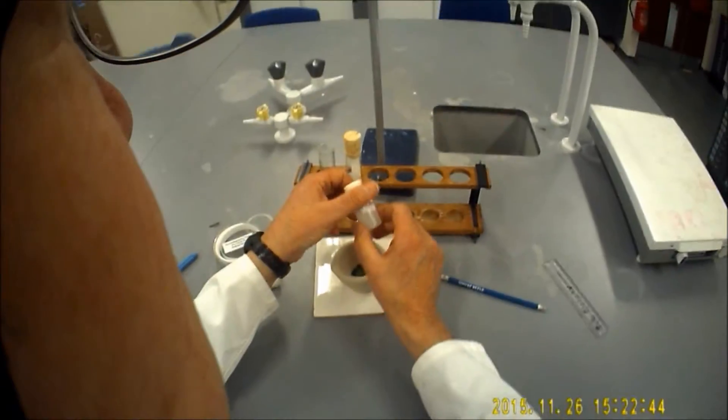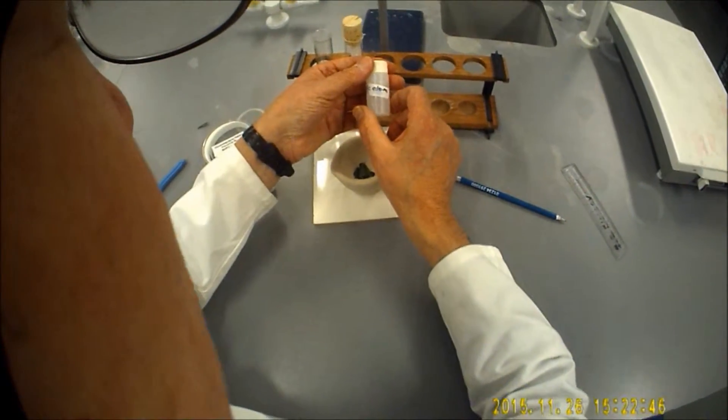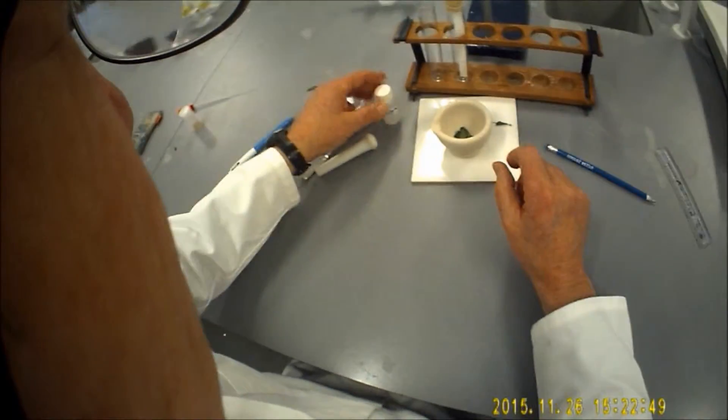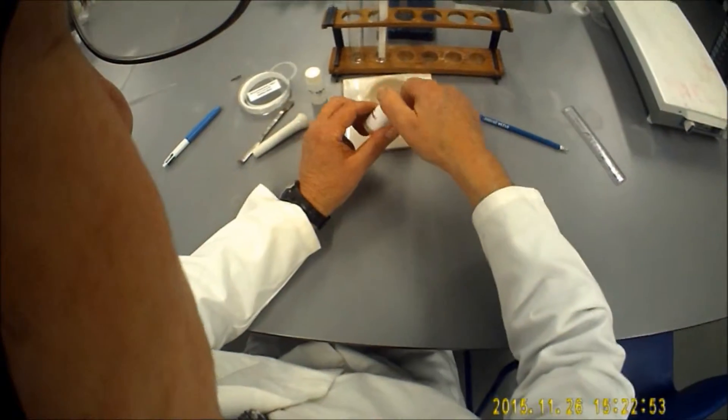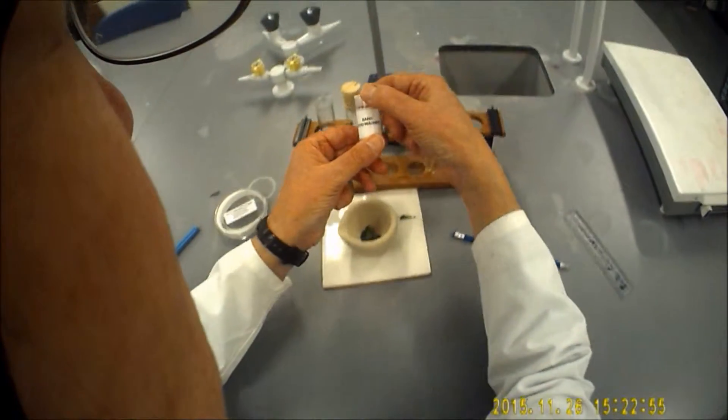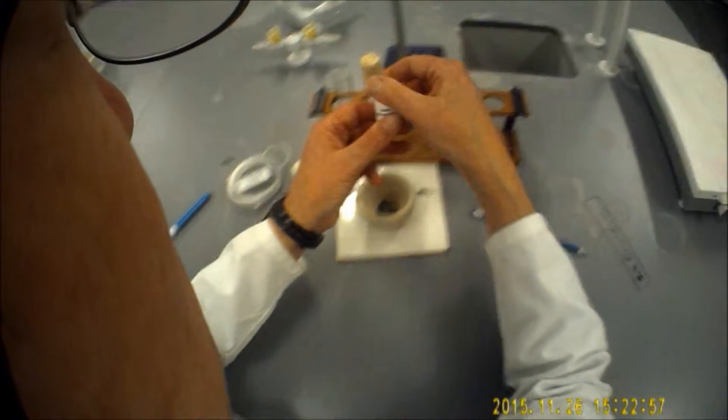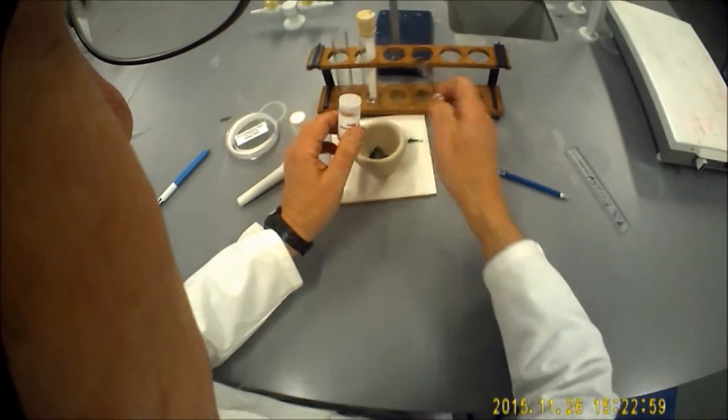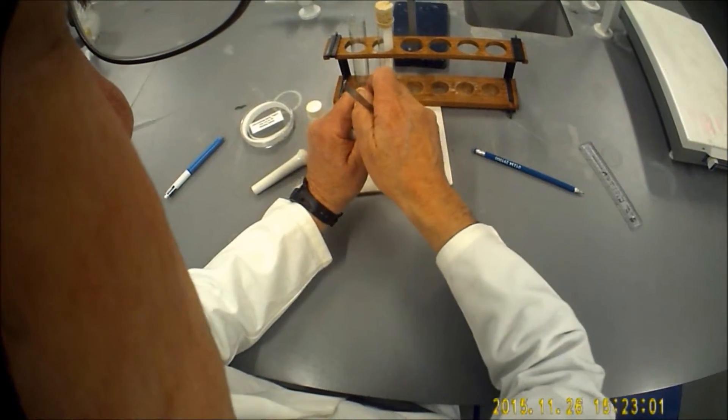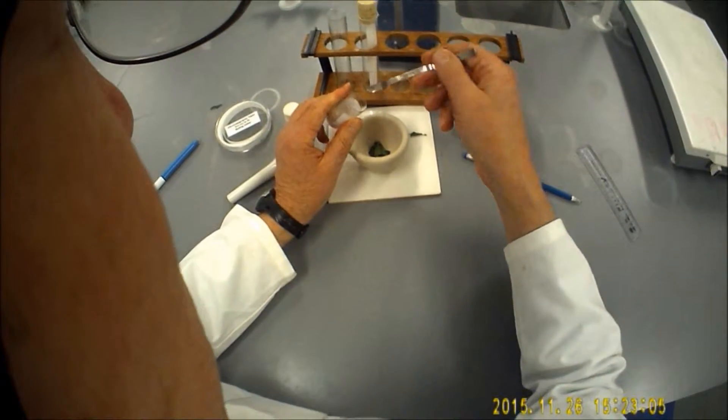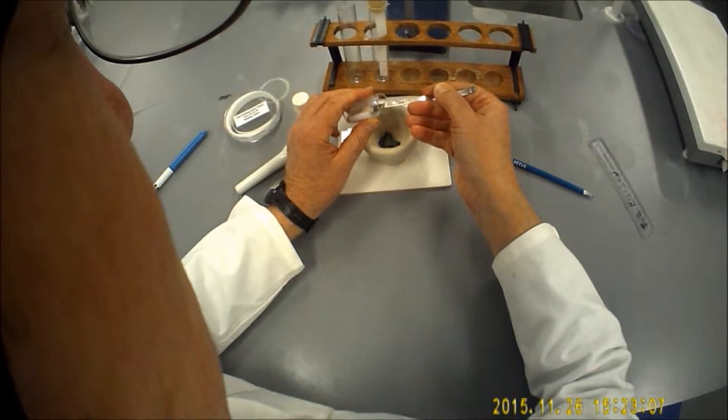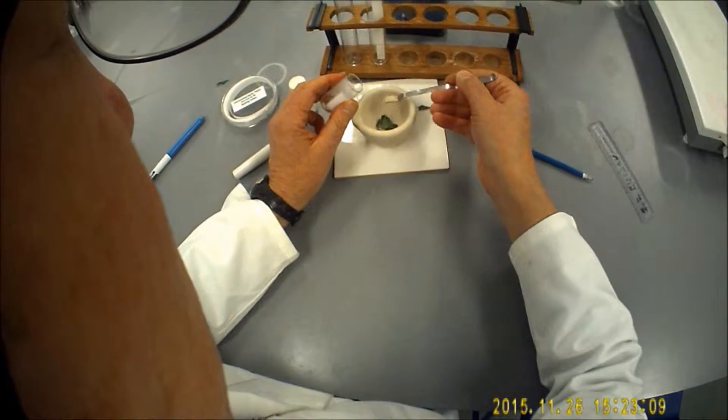And then what I'm going to do is take some acetone and extract the pigment. But to make the task easier, we're going to add some sand, which is acid-washed sand. Very fine sand, but quite abrasive. And we're going to take the lid off the container, use a little spatula, and just put a small amount in on the leaf.